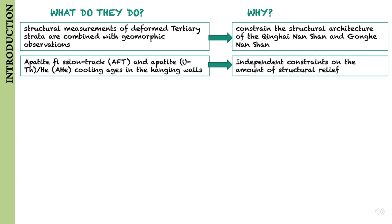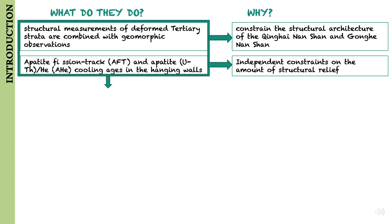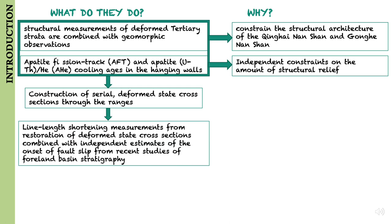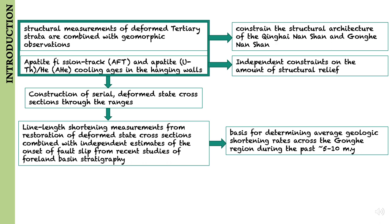Apatite fission track and apatite uranium-thorium-helium cooling ages in the hanging walls are used as independent constraints on the amount of structural relief. Together, these observations provide the basis for constructing serial deformed-state cross-sections through the ranges.